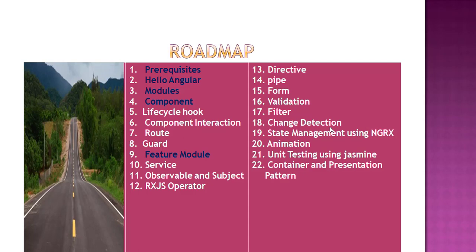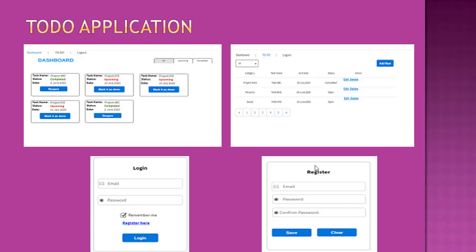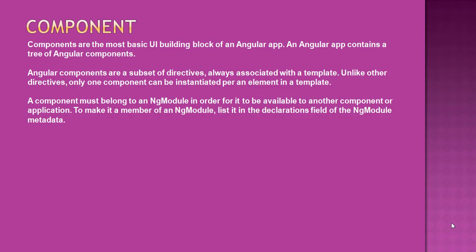Today we are going to study about components. Components are the most basic UI building blocks of an Angular app. An Angular app contains a tree of Angular components, and Angular components are a subset of directives, always associated with a template, unlike other directives. Only one component can be instantiated per element in a template. A component must belong to an NgModule in order for it to be available to another component or application, by being listed in the declarations field of the NgModule metadata.